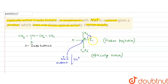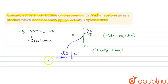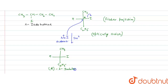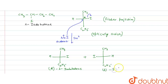In SN2, the I⁻ ion attacks the chiral carbon. Since I⁻ is also a good leaving group, it can attack from the back side. This forms two products: the R 2-iodobutane and the S 2-iodobutane.